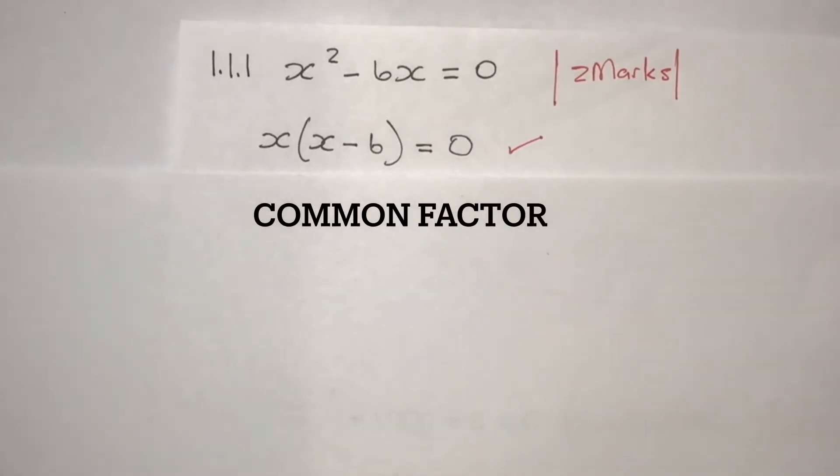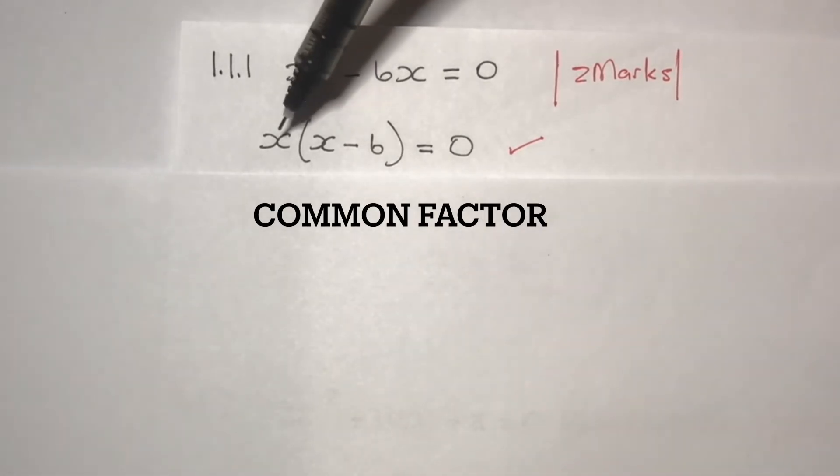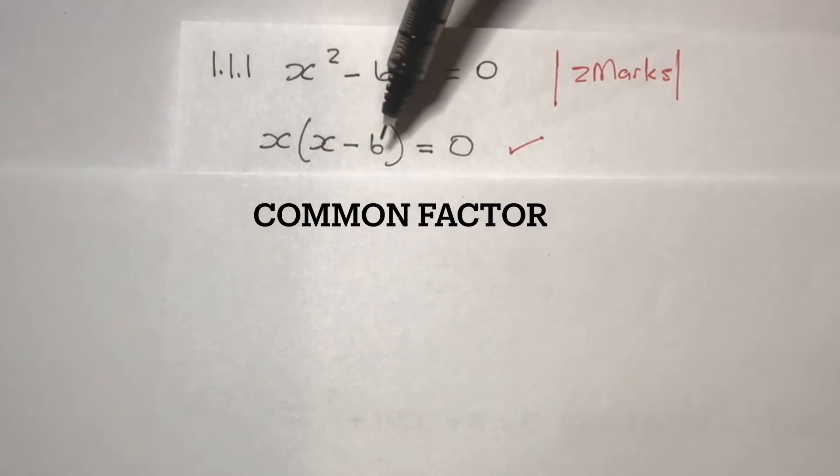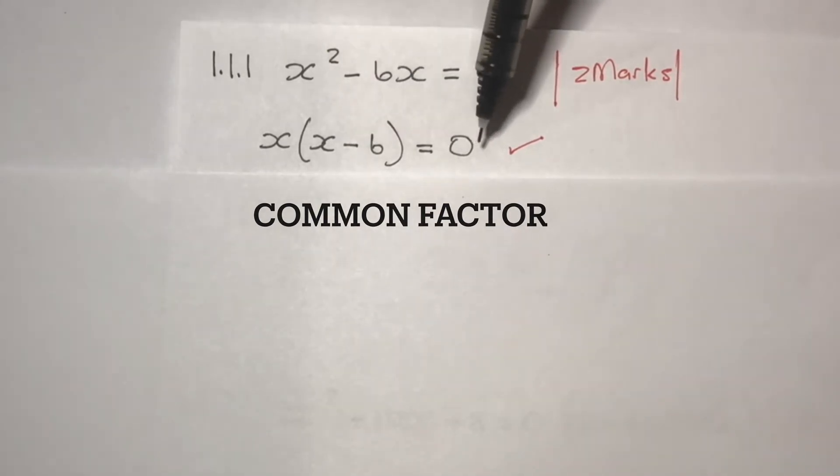Next step, x into x minus 6, close bracket, is equals to 0. So you take out x as common factor. You've got x into x minus 6, close bracket, is equals to 0.